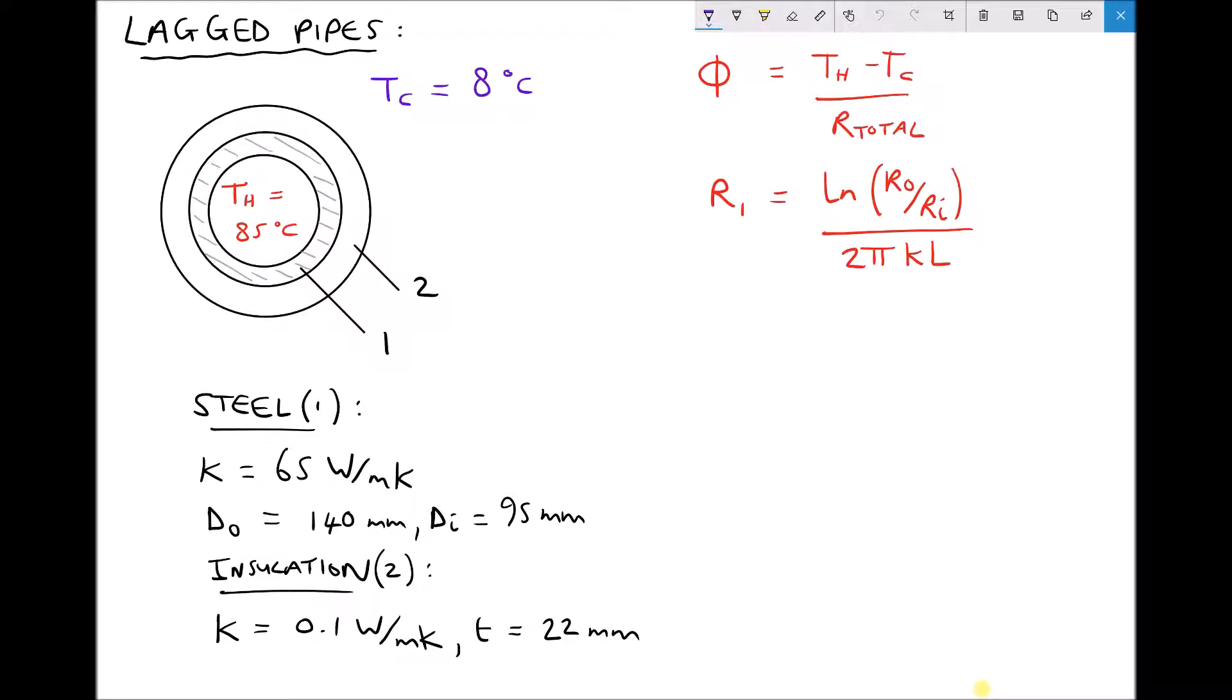We're going to begin by calculating the thermal resistance of the steel cylinder and the cylindrical insulation, and then we're going to calculate the rate of heat loss. Now I can't emphasize enough that it's so important to get clear in your head what the inside and outside radiuses are both for the steel and for the insulation. So what I'm actually going to do is produce another small sketch with the inside of the pipe, the outside of the pipe, and then the outside of the insulation.